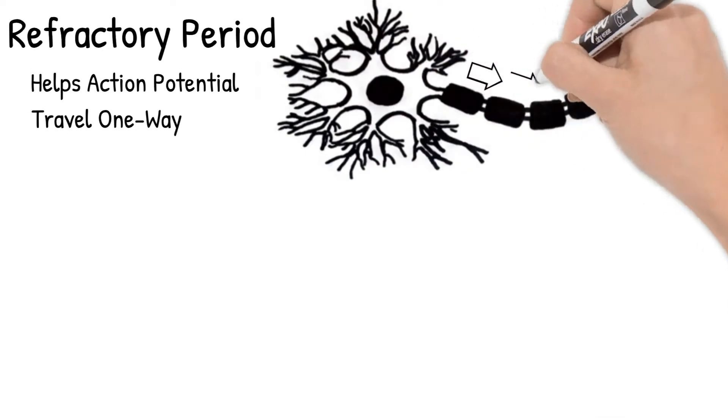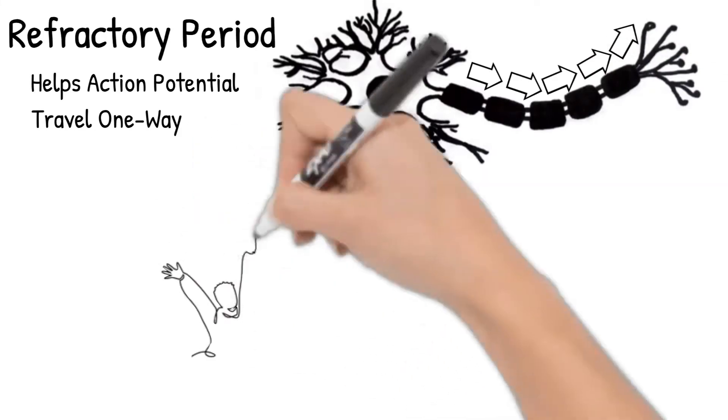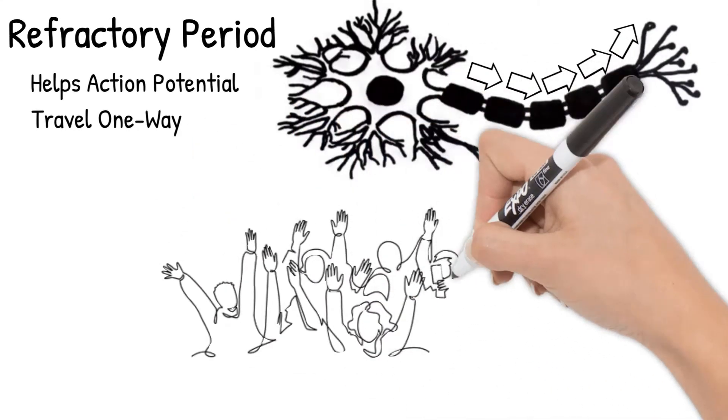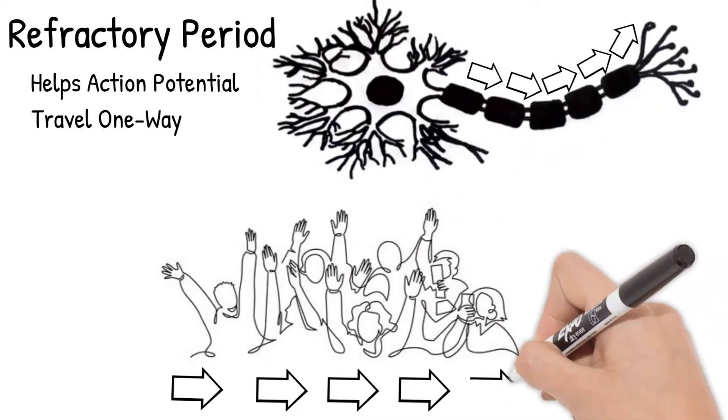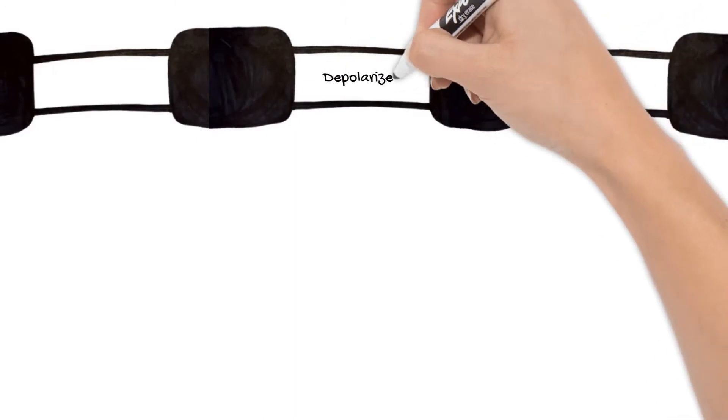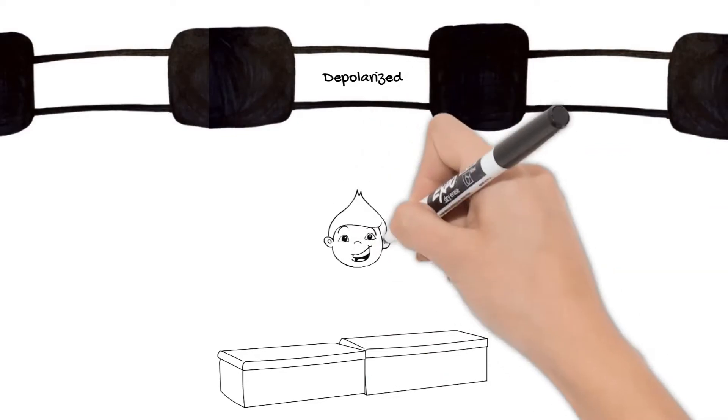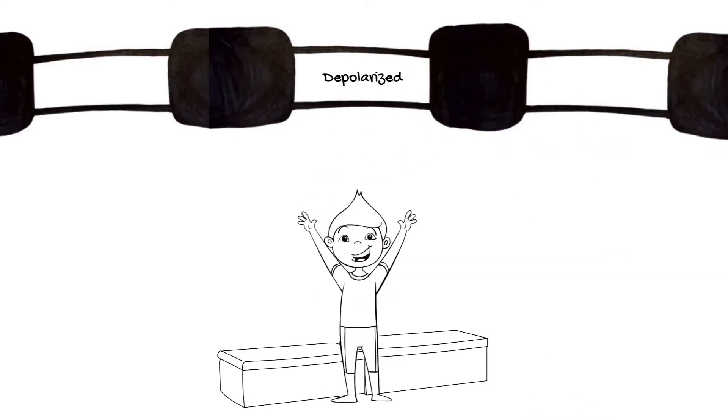An impulse travels like a wave down the axon signaling the next section to depolarize, just like doing the wave at a baseball game. When you stand up, that signals for the person next to you to stand. Looking at our neuron, say the middle section of this axon is currently depolarized. It is you standing during the wave.